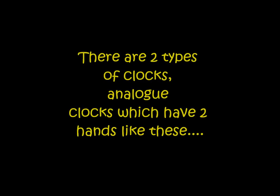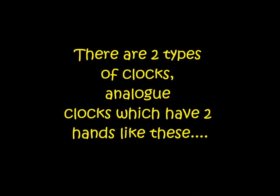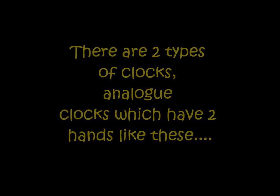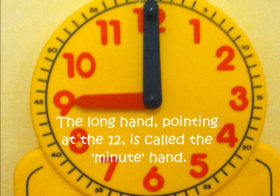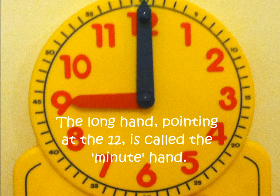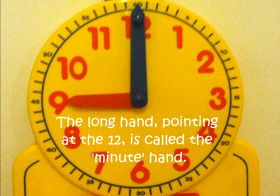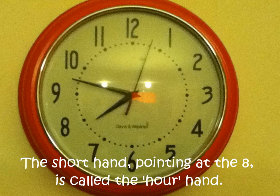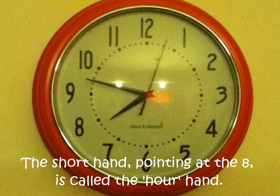There are two types of clocks. Analog clocks which have two hands like these. The long hand pointing at the 12 is called the minute hand. The short hand pointing at the 8 is called the hour hand.